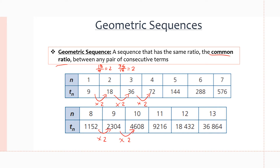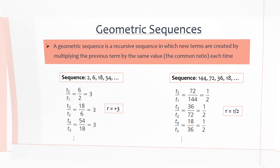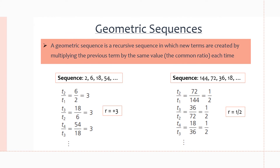We could also multiply by fractions, which means the terms will actually decrease in value. For example, we can multiply by one half — so from 20 the next term would be 10. We multiply by 1/2 each time, a consistent common ratio, but still multiplying. A geometric sequence is also a recursive sequence, just like arithmetic sequences, as new terms are created by multiplying the previous term by the same value, also known as the common ratio.